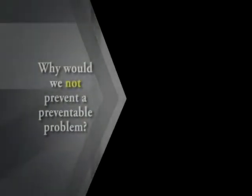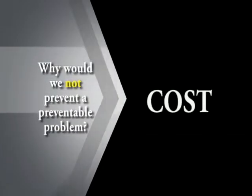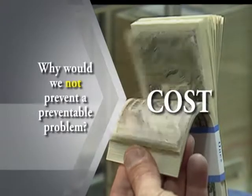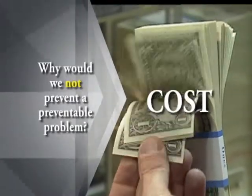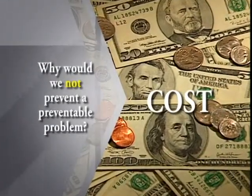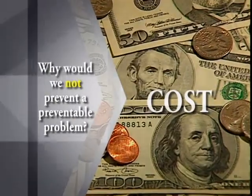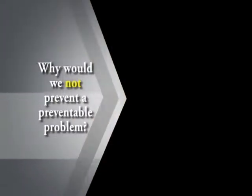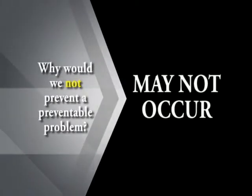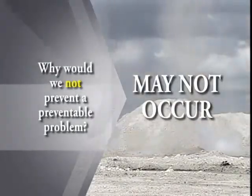Why would we choose not to prevent a preventable problem? Cost — it may cost more to prevent it than to fix it. So we accept some risk from a cost standpoint and choose not to prevent it, but we've got our first indicator so we can nip it in the bud at less cost. Another reason: the likelihood of it occurring may already be so remote that even if we do nothing, it still might not happen.